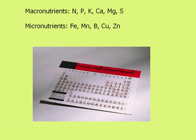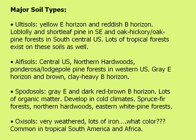There are four major soil types that play a role in forest production in the United States. Out of the 12 major soil orders, these four contain the greatest percentage of forests in the U.S.: the Ultisols, the Alfisols, the Spodosols, and the Oxisols.